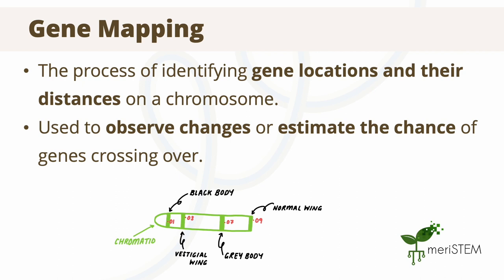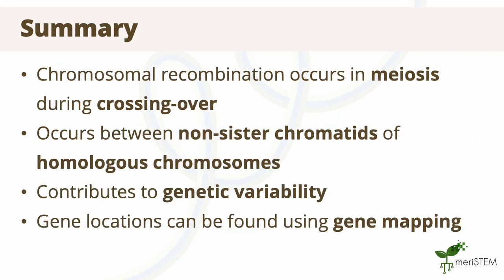This process of gene mapping can also be used to show changes in DNA due to crossing over. In summary, within this video we covered how chromosomal recombination occurs during meiosis using a process called crossing over, which exchanges genetic material. This process occurs between non-sister chromatids of homologous chromosomes. It contributes to genetic variability in offspring from their parents. We also looked at a process of gene mapping, which can be used to find locations of different genes on a chromosome.